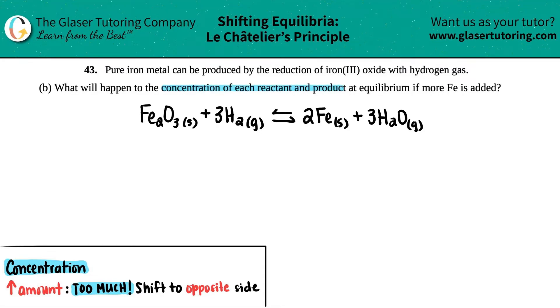Alright, so Le Chatelier's principle. We're shocking the system by adding more iron, and we need to come back to equilibrium. What's going to happen?